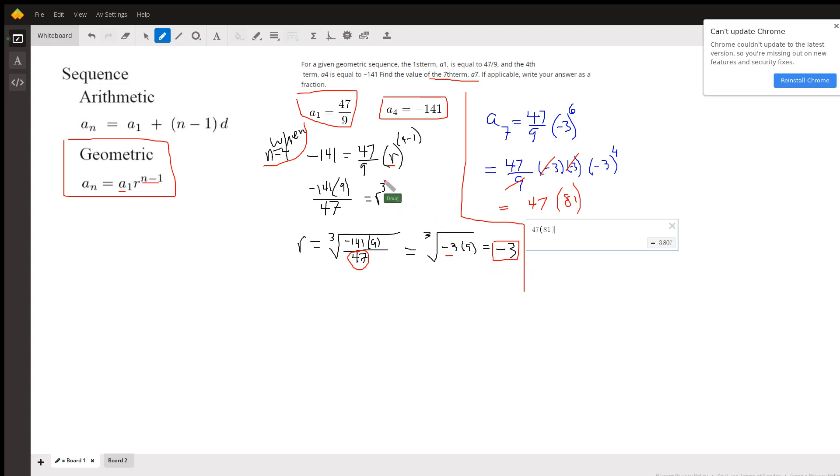Once you know r, you can find the seventh term by substituting into that formula again. The seventh term is 47 ninths times the common ratio raised to the 7 minus 1, or 6 power.